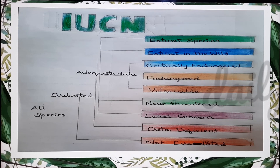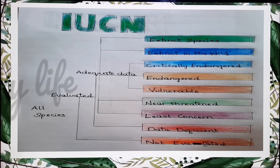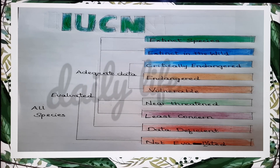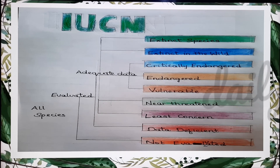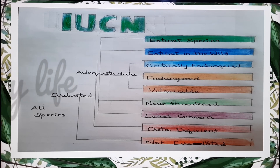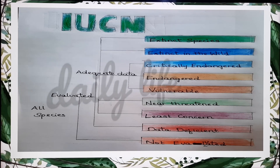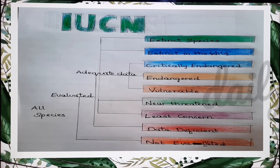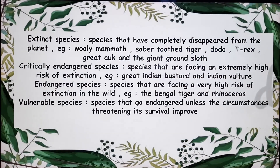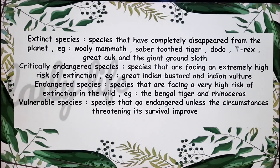The risk of extinction starts from least concern and ends at extinct species. Extinct species are species that have completely disappeared from the planet.